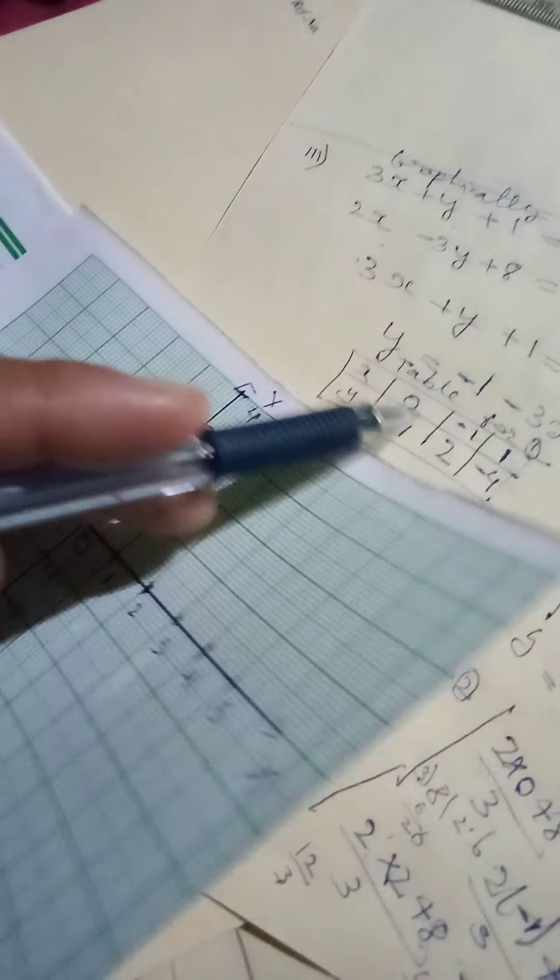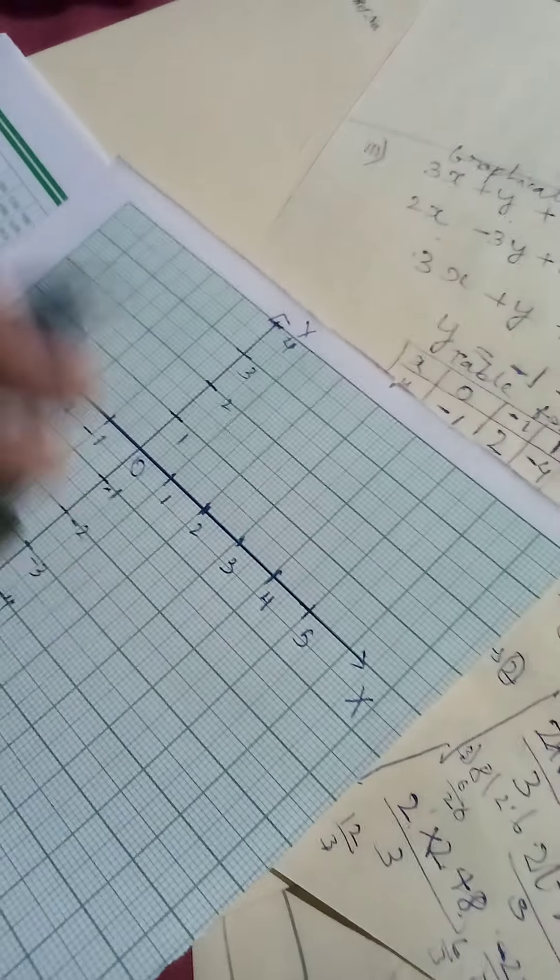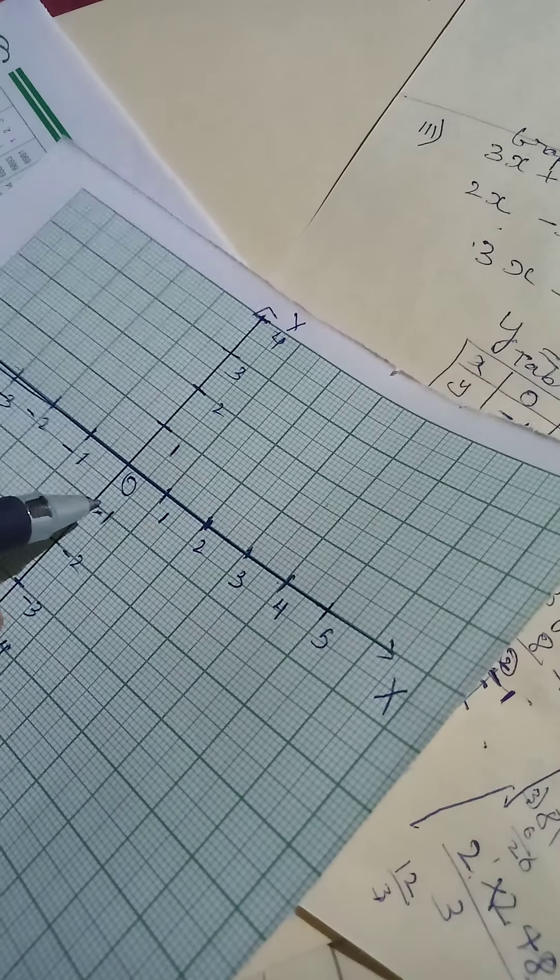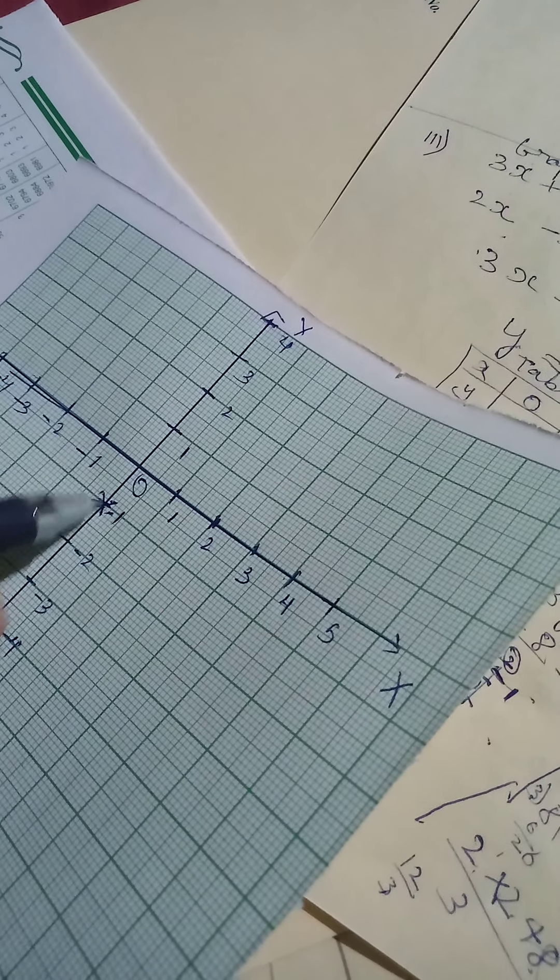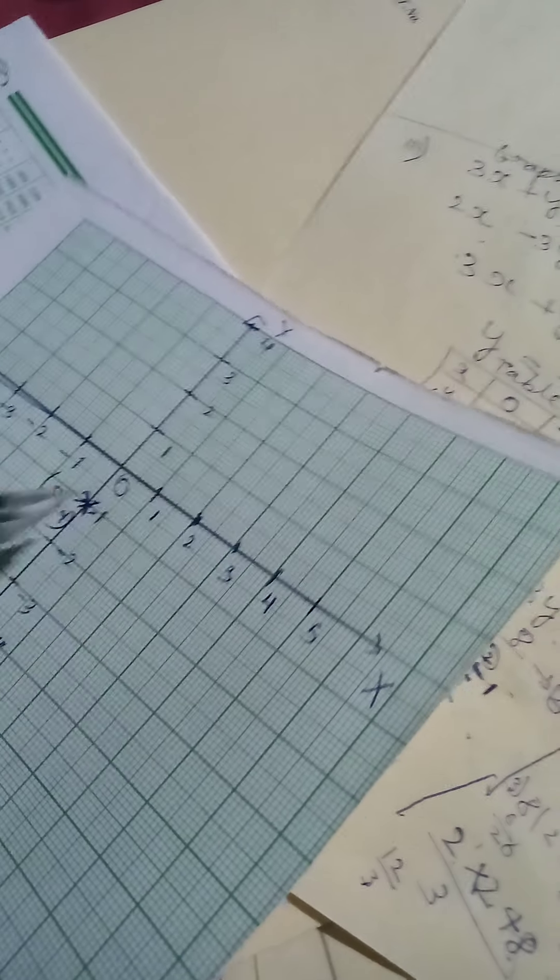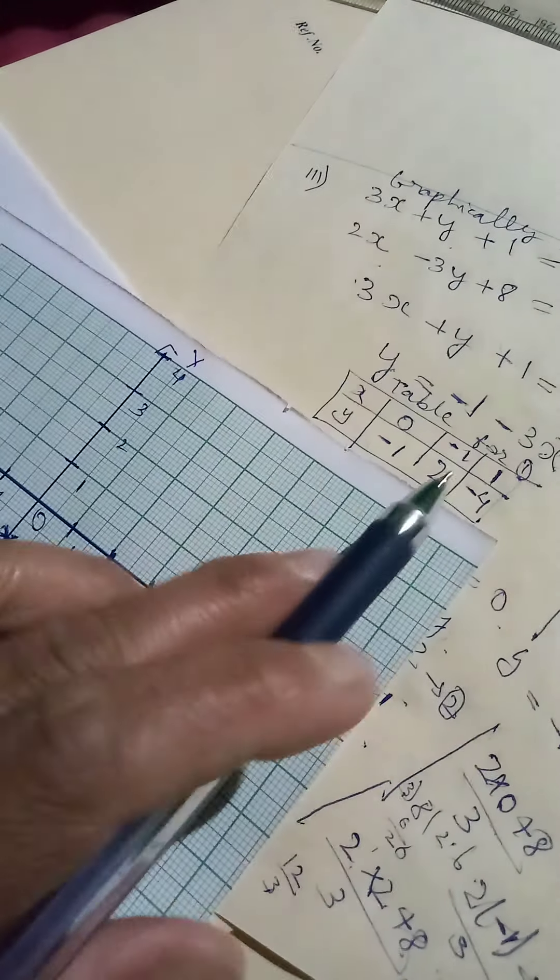So we'll see with number 1. We have 0, minus 1. X is 0, exactly on the line. Y axis. Y is minus 1. So mark it exactly at Y equal to minus 1. Then after that, we have minus 1, 2.